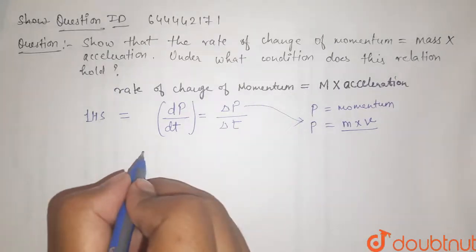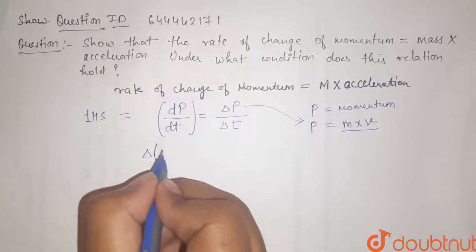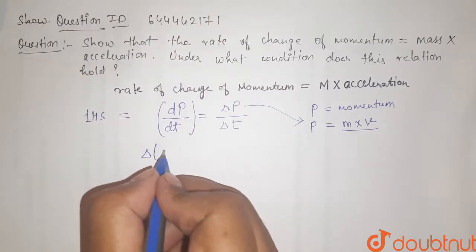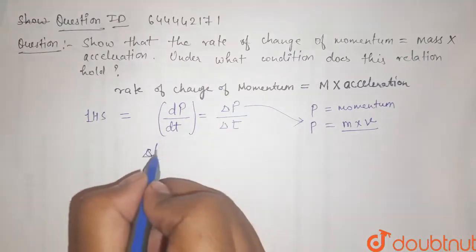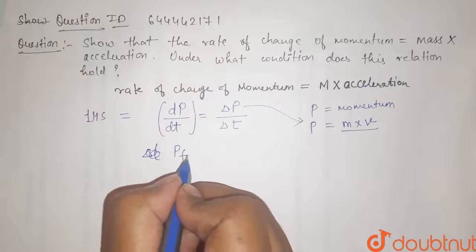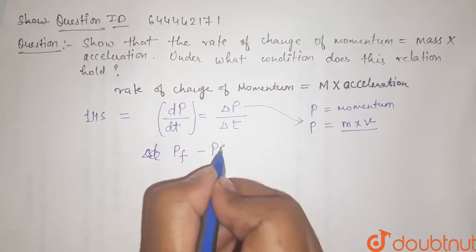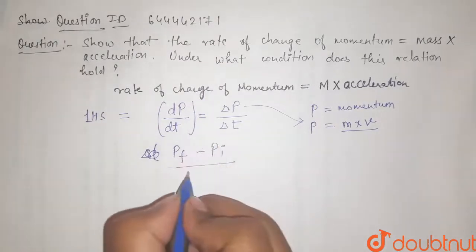So it will be like delta p. The value of p is, it is delta p means p final minus p initial upon delta t means time taken.